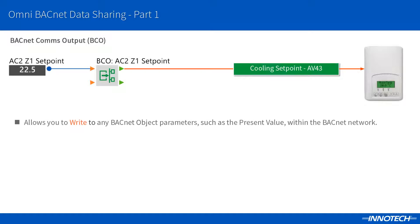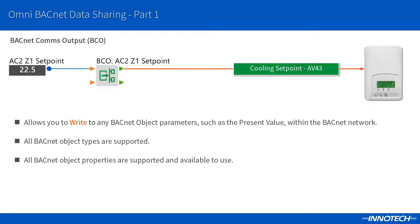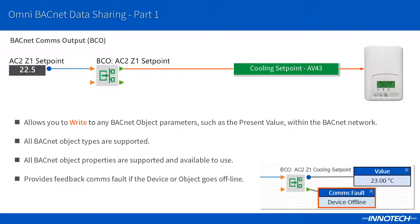The BCO block provides the ability to write to an object's property such as the present value. This could be a set point on a device or to override a binary output to control a fan on or off. As long as the remote object supports the right command, you can perform many tasks within the network. As with the BCI, there are many property types to select from as listed by the BACnet standards, and the most common property used is the object's present value. Comms fault feedback is also supported to advise if the remote object or device goes offline or has other issues. We will look at each of these blocks in more detail in part 2 and 3 of this series.